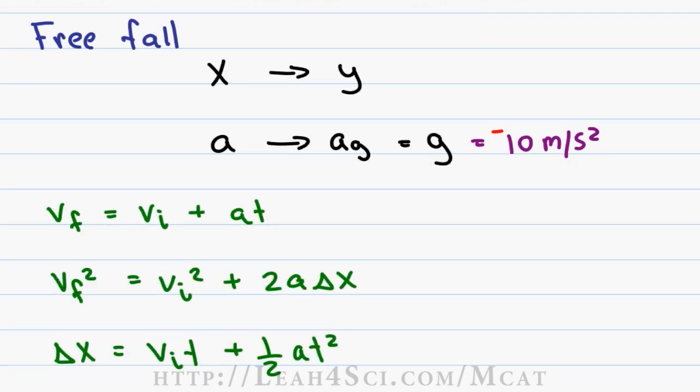The three equations to consider for free fall have acceleration in them. The first is v final equals v initial plus at. We want to swap out the a for g, and since gravity is down we change plus gt to minus gt because negative implies a downward direction.